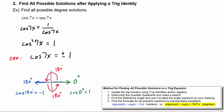Looking at these two solutions, we can see that they are 180 degrees apart from each other. So when we make our equation, we take the argument of our function, which is 7x, and set it to the first angle where it happens — zero degrees — then add 180 degrees times n, because starting at zero, adding 180 gives 180, adding another 180 gives 360, and so on, bouncing between all angles coterminal with zero and all angles coterminal with 180.